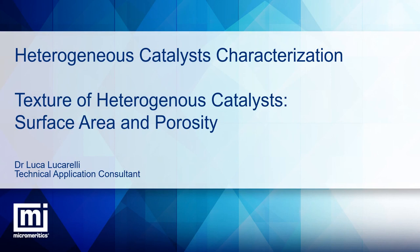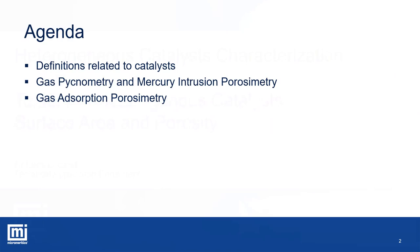Welcome everybody to this first webinar about heterogeneous catalyst characterization. Today we will talk about the physical characterization techniques providing information on density, porosity, and surface area, and how this information improves the knowledge about the performances of a catalyst. We will focus on some definitions related to catalyst and what happens in a catalytic process to better understand the role of porosity, density, and surface area. Three main techniques will be described in detail: gas porosimetry, mercury porosimetry, and pycnometry.